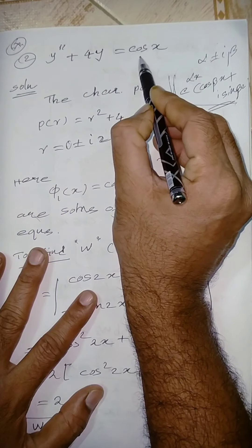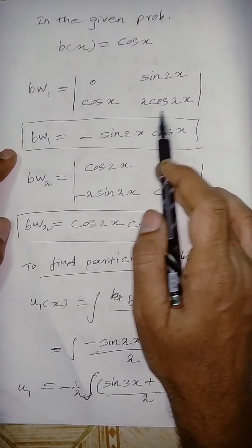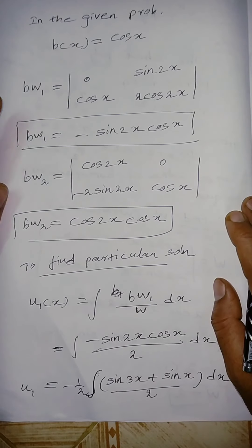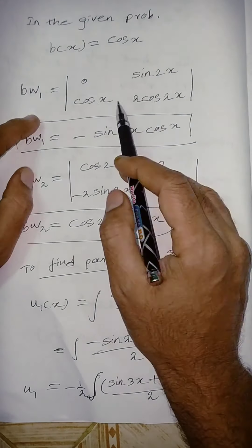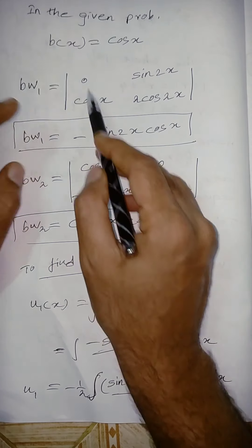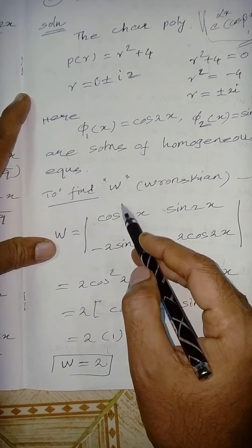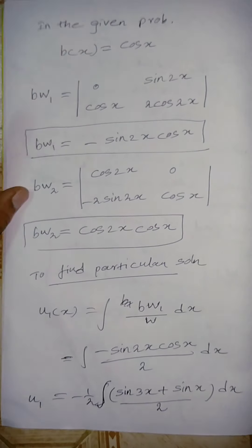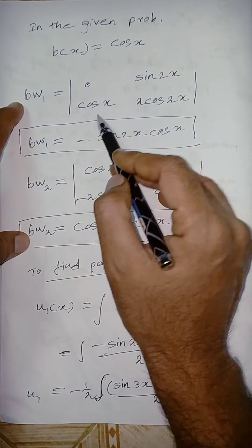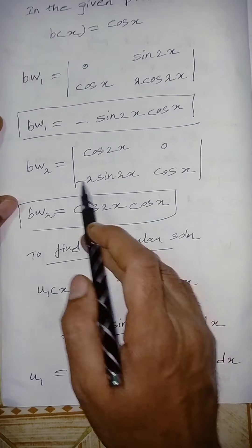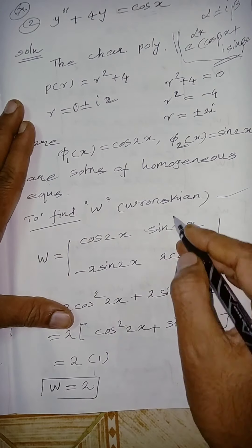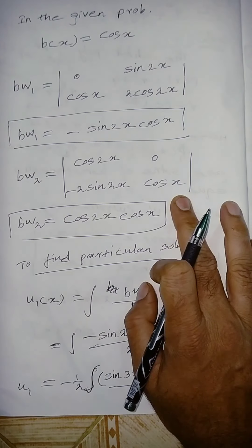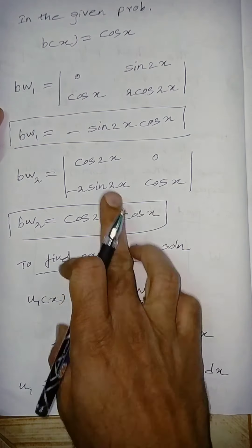In this problem b(x) = cos x. For bW₁, replace the first column with [0; cos x], keeping the second column [sin 2x; 2cos 2x]. The determinant gives bW₁ = −sin 2x · cos x. For bW₂, keep the first column [cos 2x; −2sin 2x] and replace the second column with [0; cos x], giving bW₂ = cos 2x · cos x.